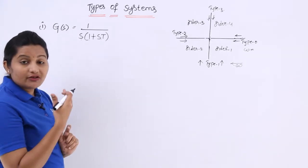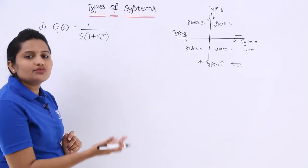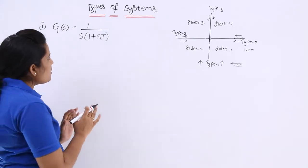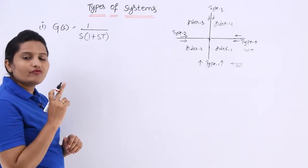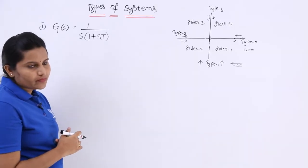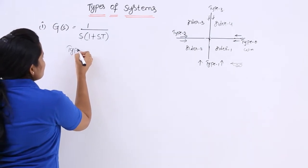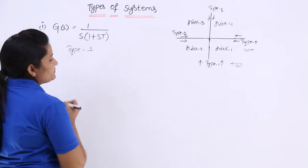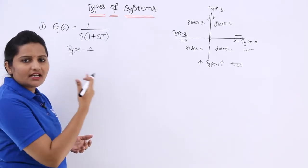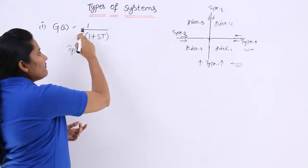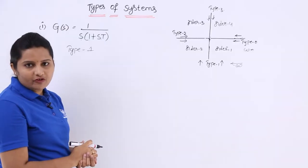Since S is there, that means 1 pole at origin. If S² is there, 2 poles at origin; if S³ is there, 3 poles at origin. Here I am having an S term, which means 1 pole at origin. The number of poles at origin defines the type number. As I am having 1 pole at origin, this is a type 1 system.